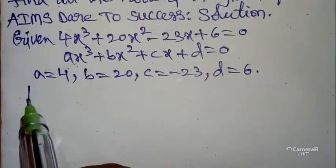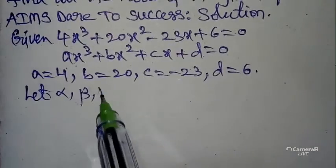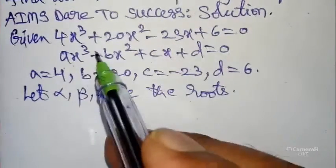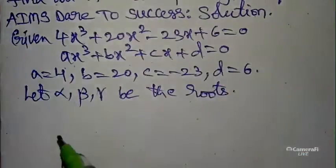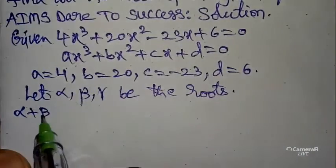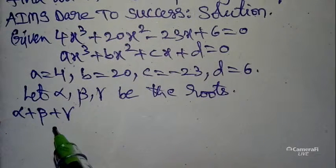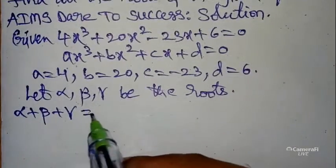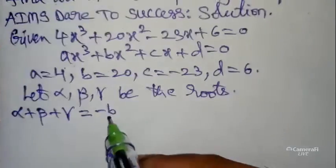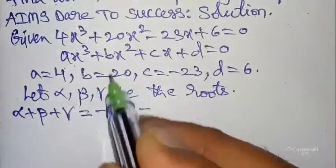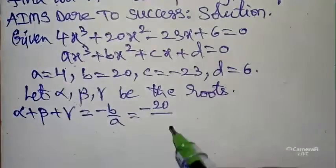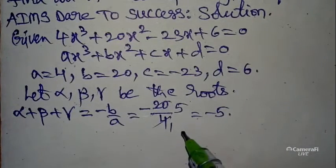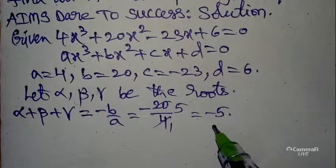Let alpha, beta, gamma be the roots of the given equation 4x³ + 20x² - 23x + 6 = 0. We can use three formulas, but only two are useful. The sum of the roots: alpha + beta + gamma = -b/a = -20/4 = -5.